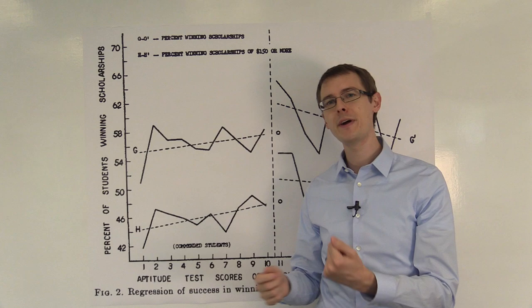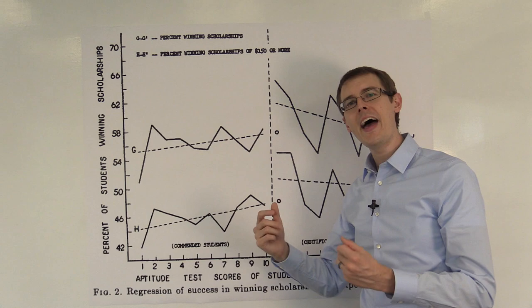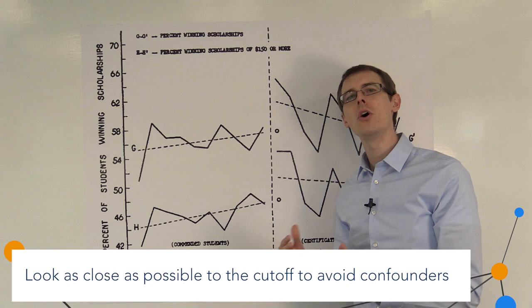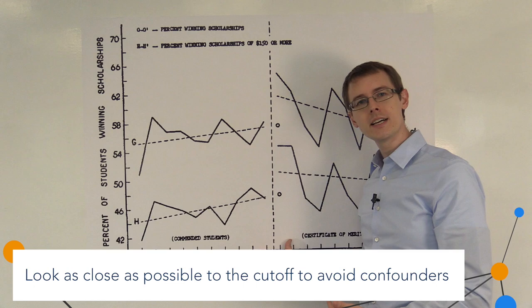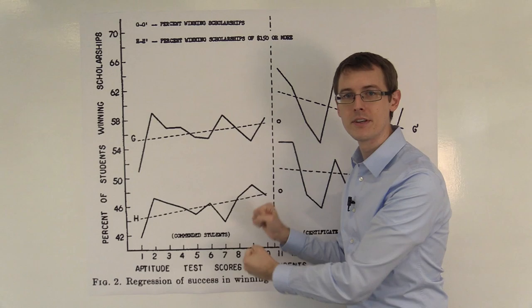It's only once we look close to the cutoff that that confounding variable is no longer an issue because close to the cutoff, these students all have roughly the same test score. So, that is very important. We have to look just next to the cutoff and only compare averages on the right with averages on the left. That's the main idea.